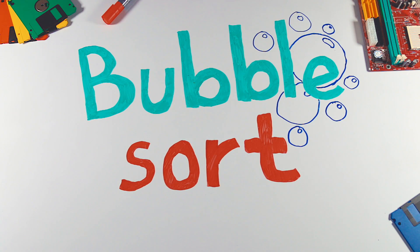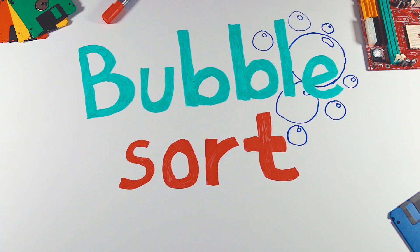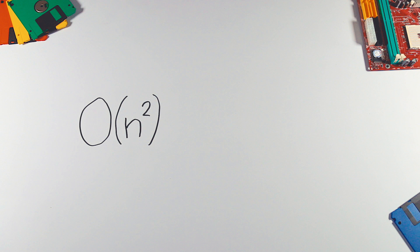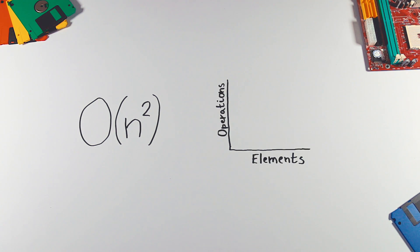Bubble Sort, also known as Sinking Sort, is famous for its terrible performance. It has quadratic complexity, which means that its efficiency decreases exponentially with larger number of items. Let's see how it works.